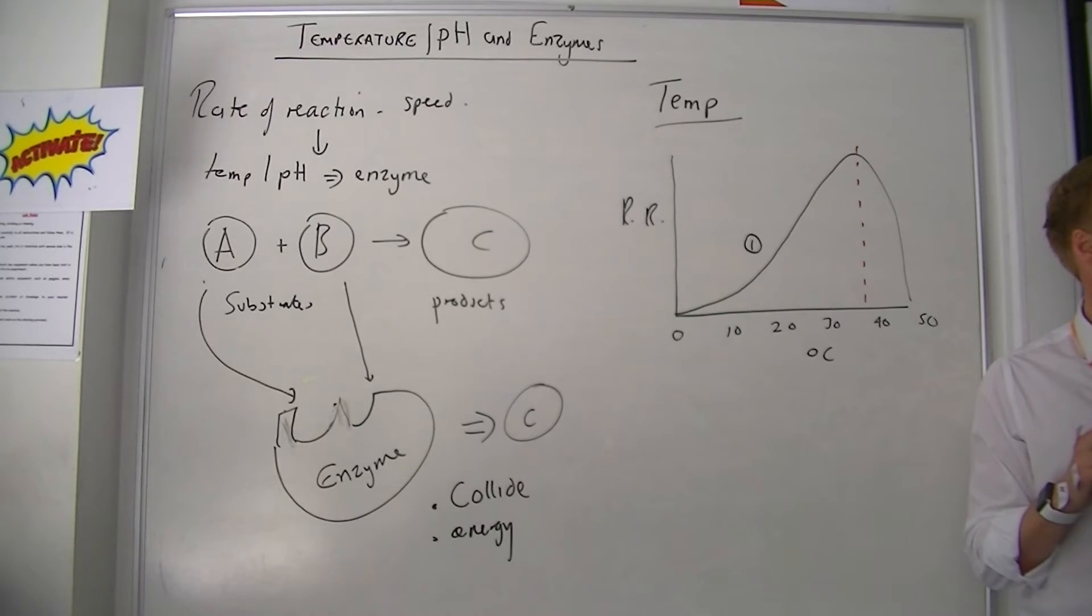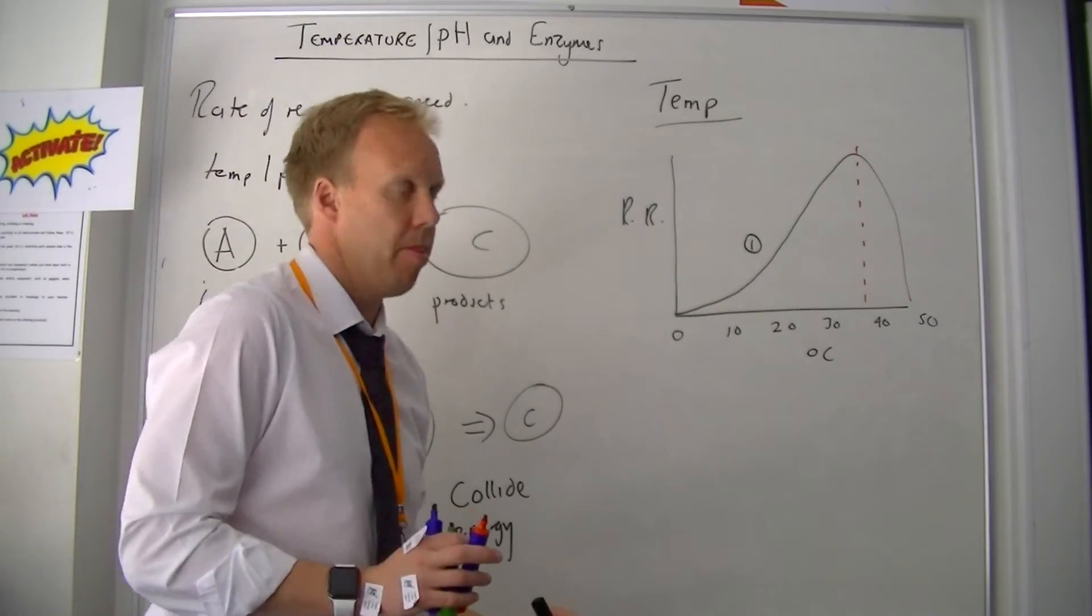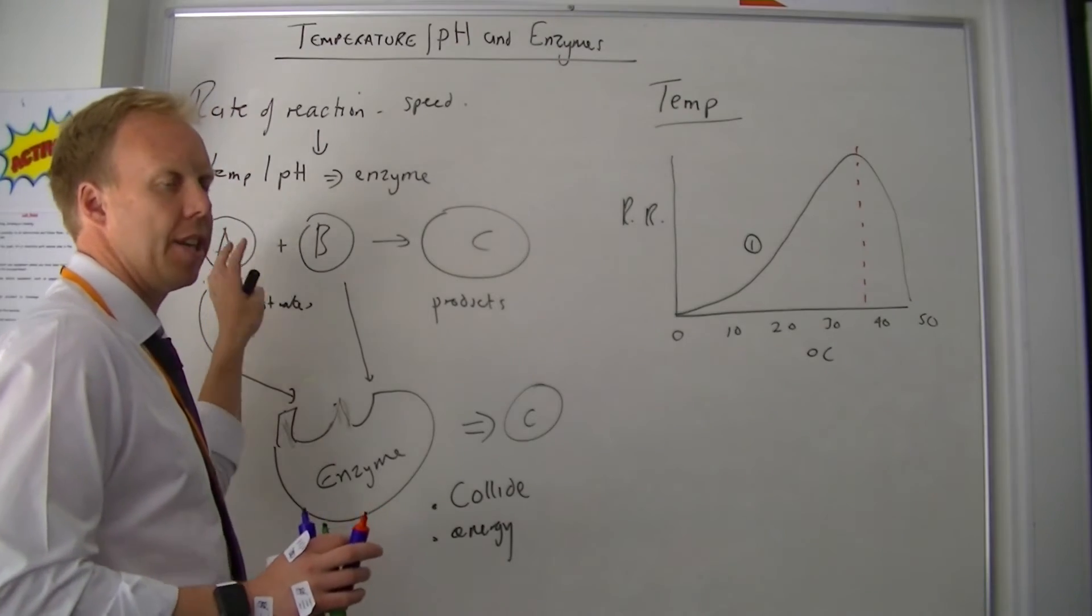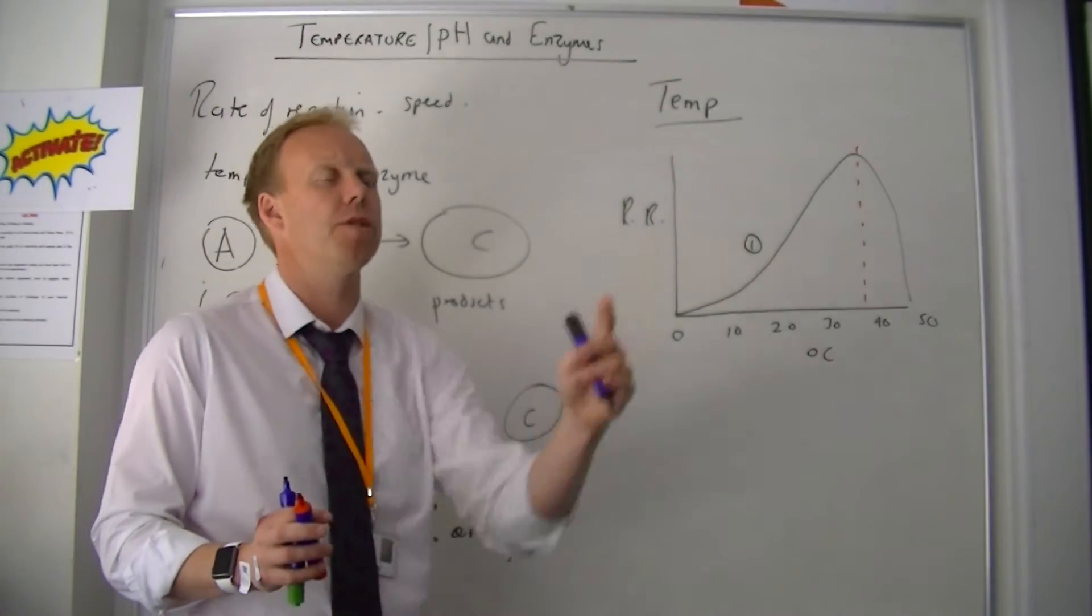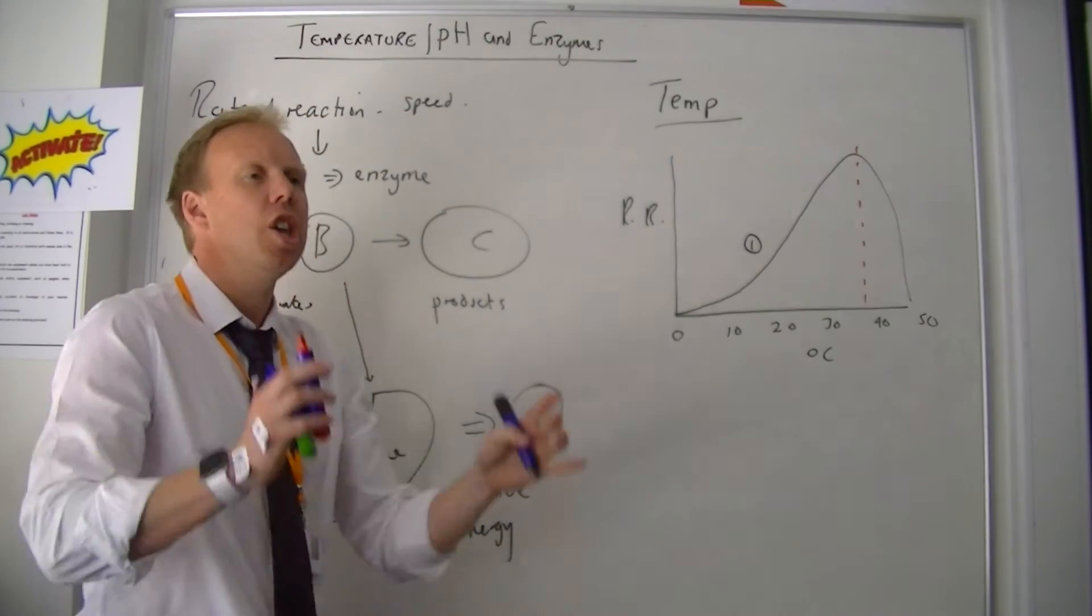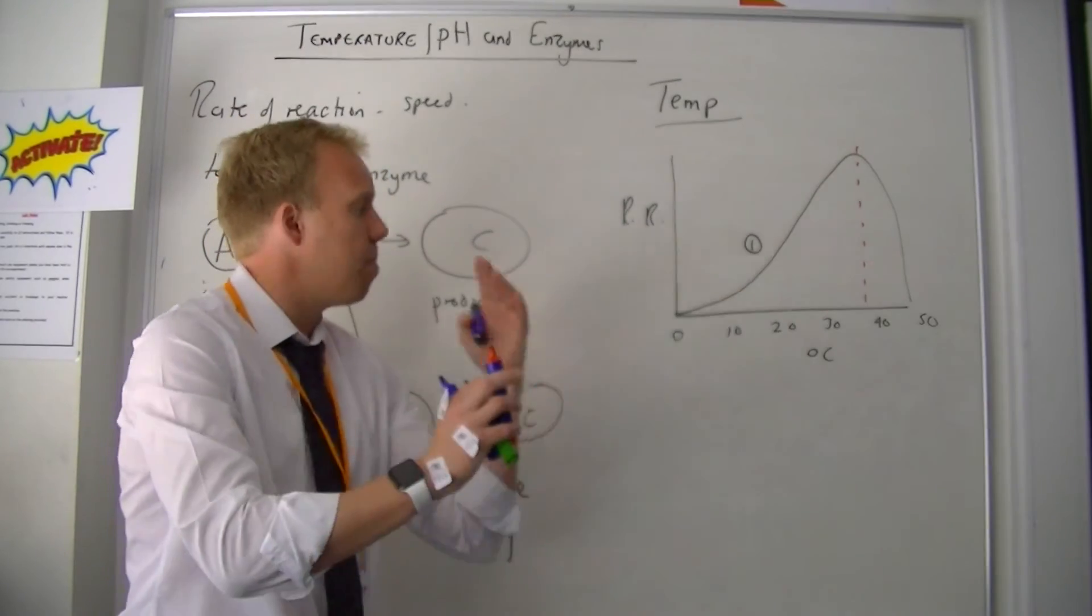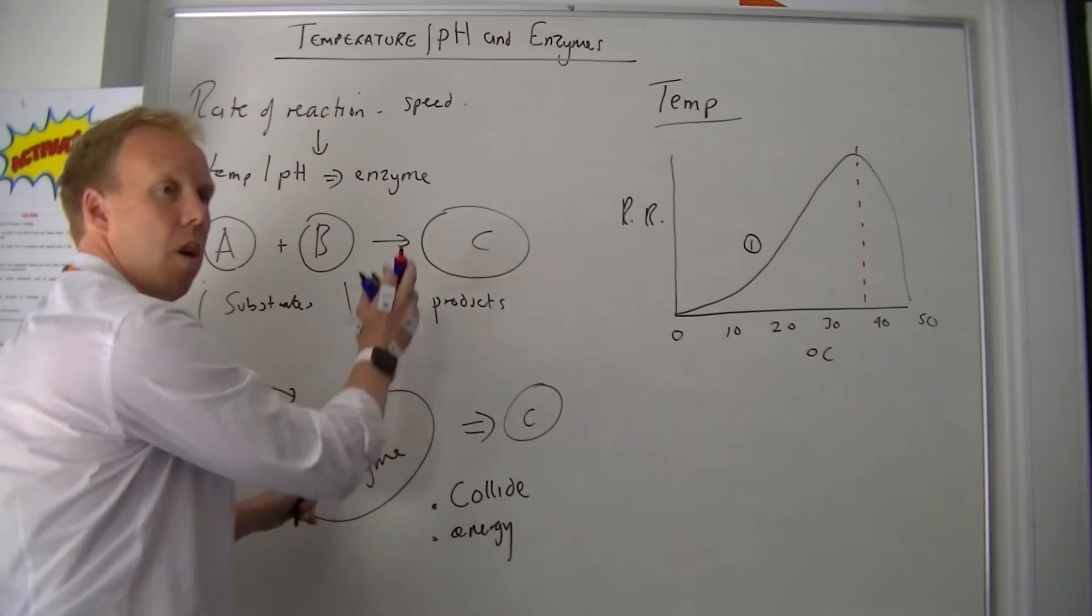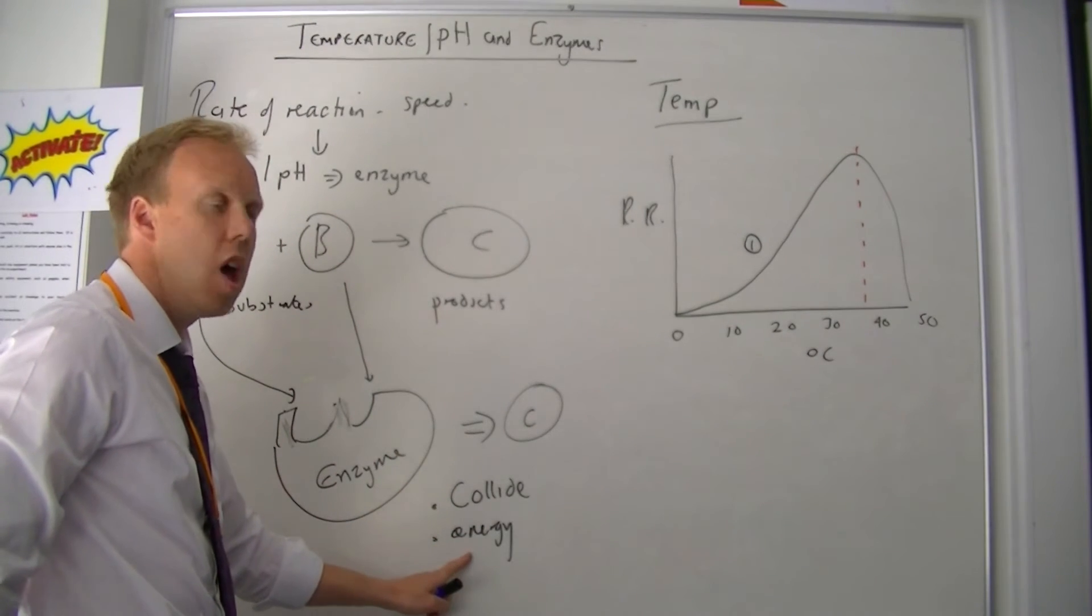This is because - I need you to understand part one first. As you increase the temperature, what do you think happens to particles A, B, and the enzyme that are sat there in that beaker? They'll move around faster. You're giving them more energy. Whatever you put underneath is giving the particles energy, they move around more. If they move around more they will collide more and they will collide with more energy.